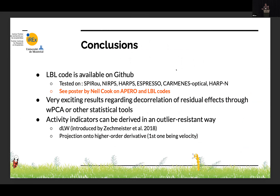In conclusion, the LBL code is on GitHub. You can see a poster by Neil Cook about the software implemented for SPIRou, NIRPS, HARPS, ESPRESSO, and HARPS-N. If you want to use it on your instrument, don't reinvent the wheel — contact us on a best-effort basis; it's not that hard to include a new instrument. We also have exciting results with weighted PCA and activity indicators equivalent to the dLW indicator, derived in the same statistical way.